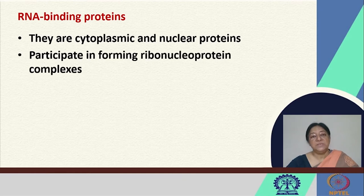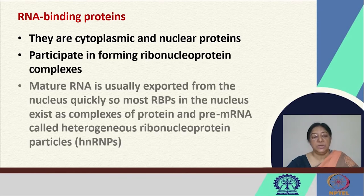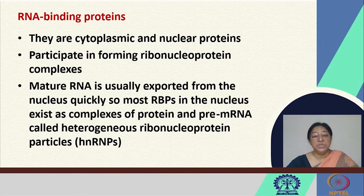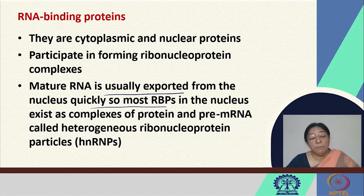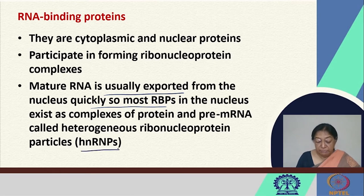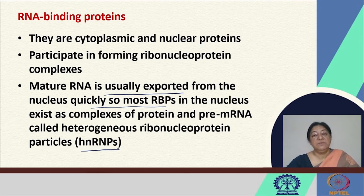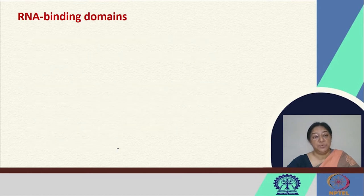The RNA binding proteins are cytoplasmic and nuclear proteins because of their importance in specific processes — they have to be present at many places in the cell. They also participate in forming ribonucleoprotein complexes. Mature RNA is usually exported from the nucleus very quickly, so the RNA binding proteins in the nucleus exist as complexes of protein and pre-mRNA, called heterogeneous ribonucleoprotein particles, or HNRNPs.